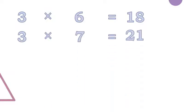Three sixes are eighteen. Three sevens are twenty-one. Three eights are twenty-four.